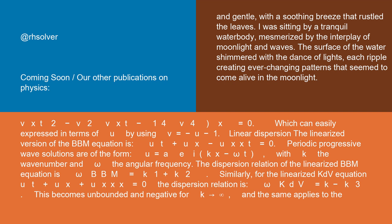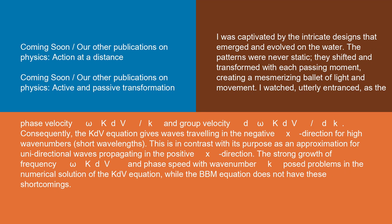This becomes unbounded and negative for k → ∞, and the same applies to the phase velocity ω_KdV/k and group velocity dω_KdV/dk.